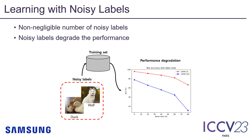To construct a dataset to train a deep neural network, a large number of samples should be labeled. However, due to human errors such as simple mistakes or complex images, many noisy labels appear. These noisy labels are harmful for training a network. As you can see in the graph, as the noise ratio increases, the performance degrades gradually.